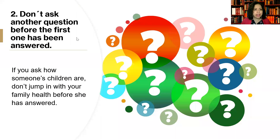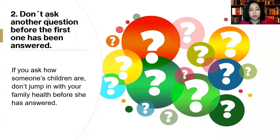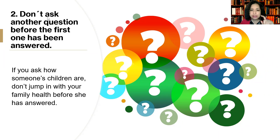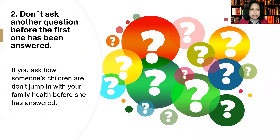Number two: Don't ask too many things before the question you already asked has been answered. Don't ask another question before you even get the answer. If you want to be a good speaker, you also need to be a good listener — that's the simplest rule ever. If you ask how someone's children are, don't jump in with your family talk before the other person has given you an answer. Don't ask too many questions at the same time or start talking more before getting the answer from the other person.